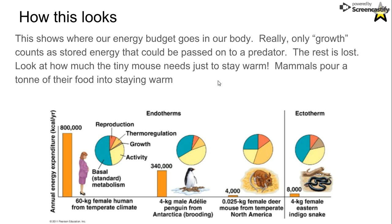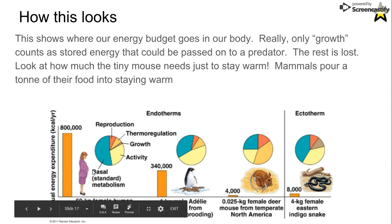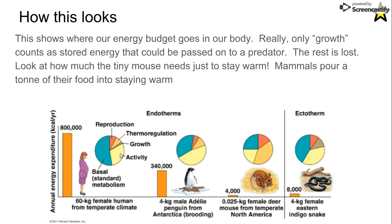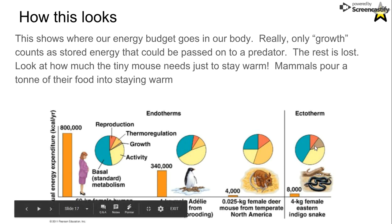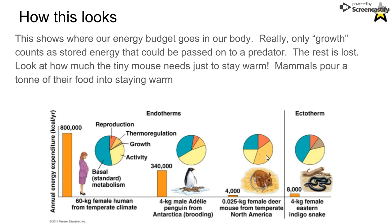Looking at these animals, a human being uses energy to heat up and a lot for activity. Oddly, the penguin doesn't need as much. When a human rests, we still burn most of our energy just to keep going. A penguin at rest burns very little. For the snake, the thermal activity wedge is gone entirely — they simply don't need it.